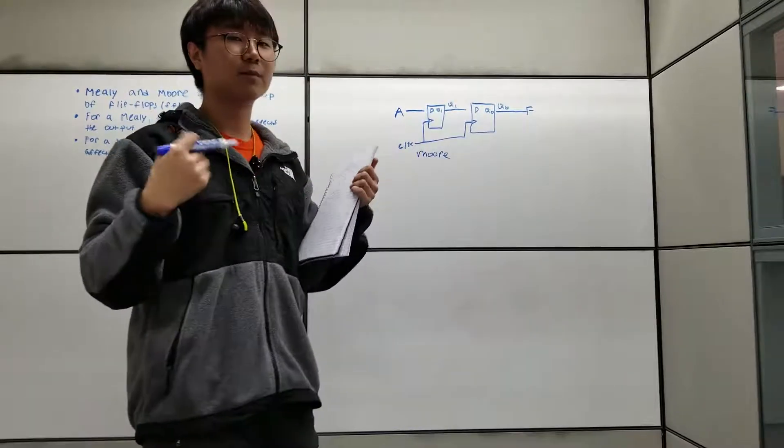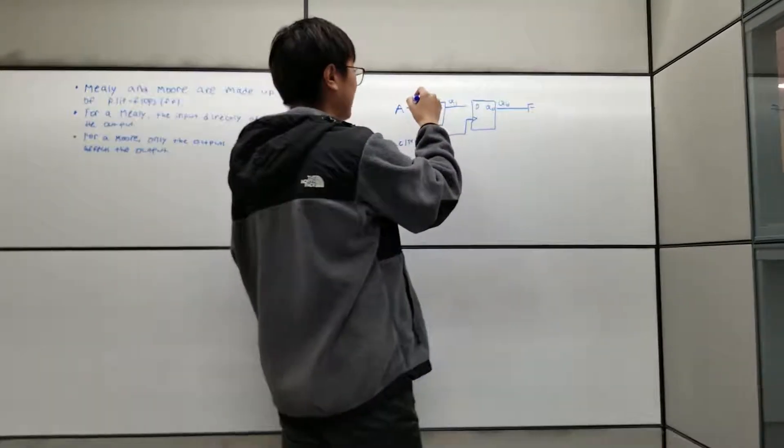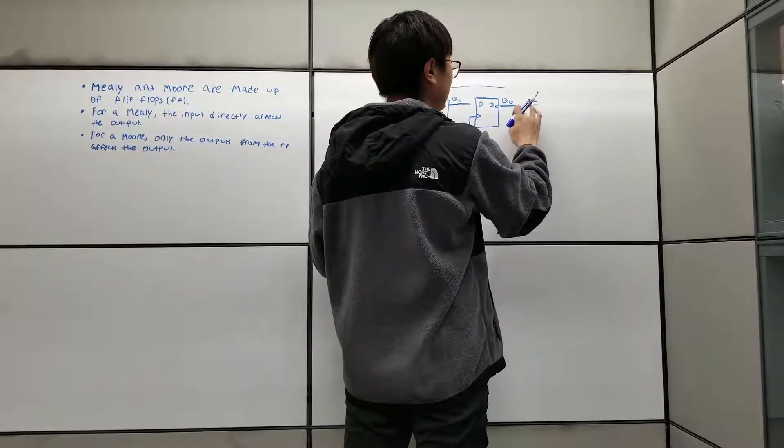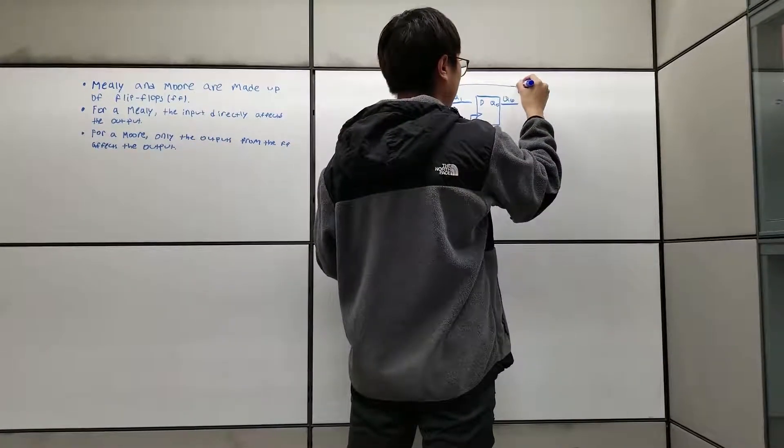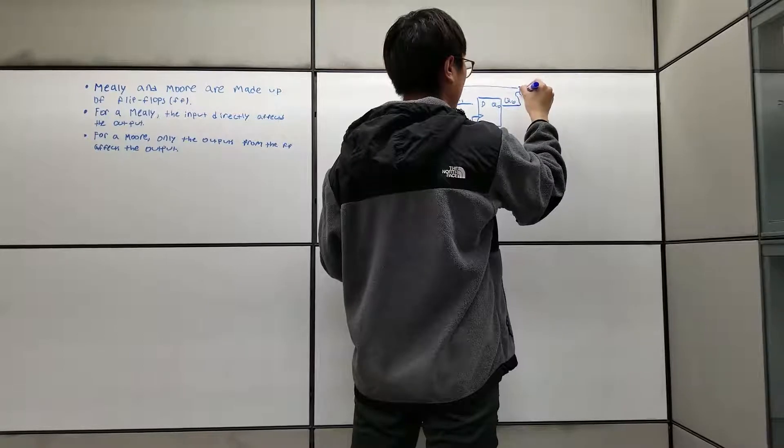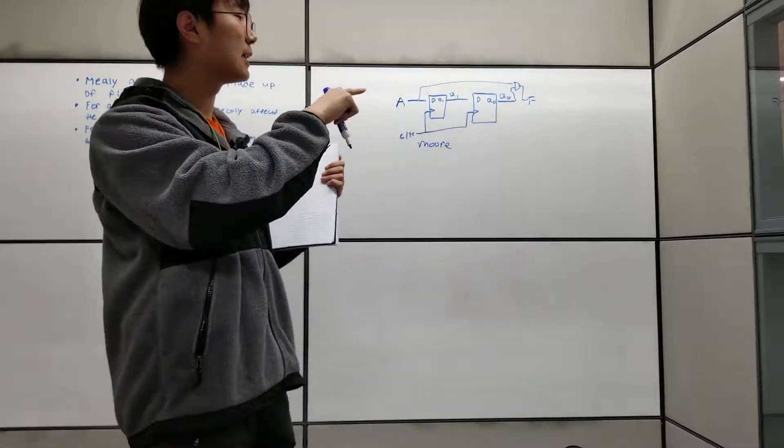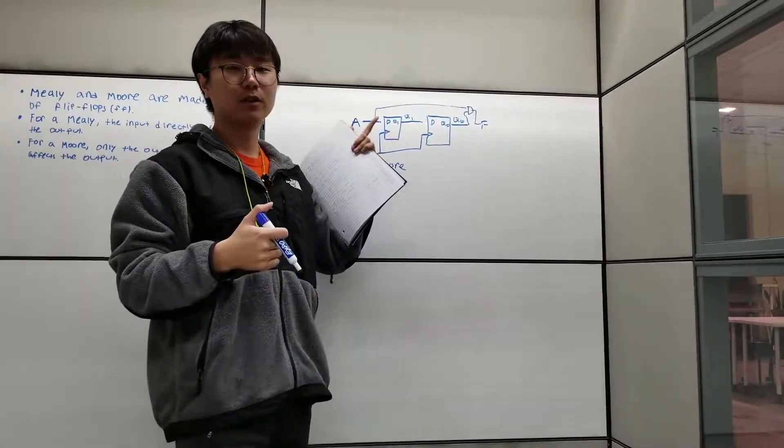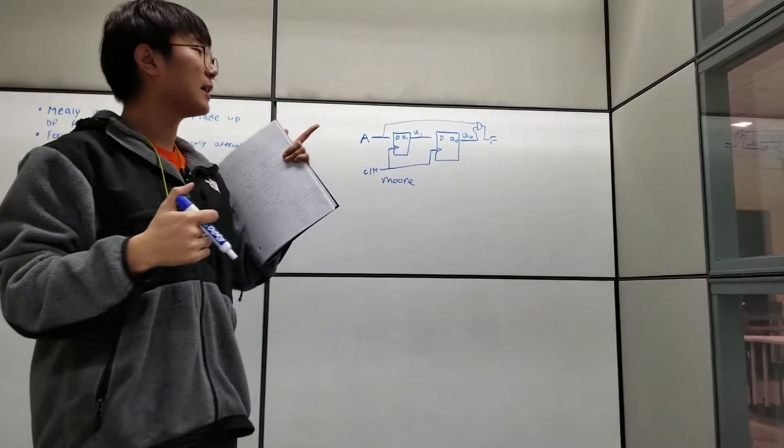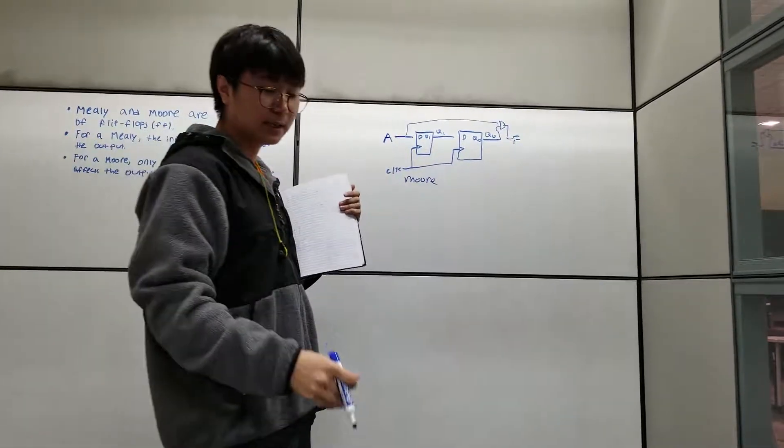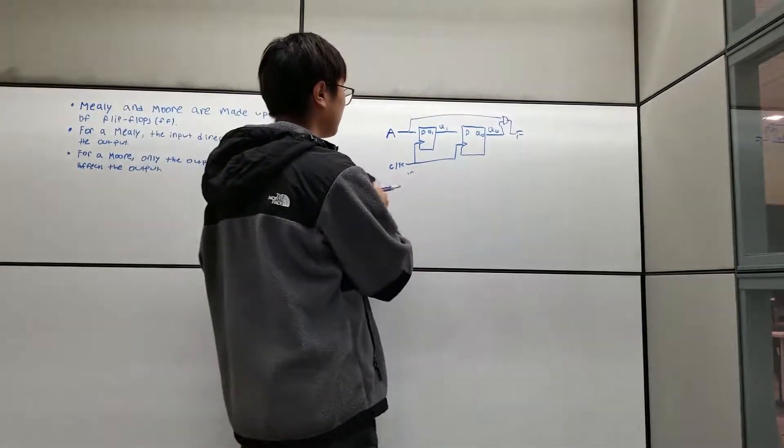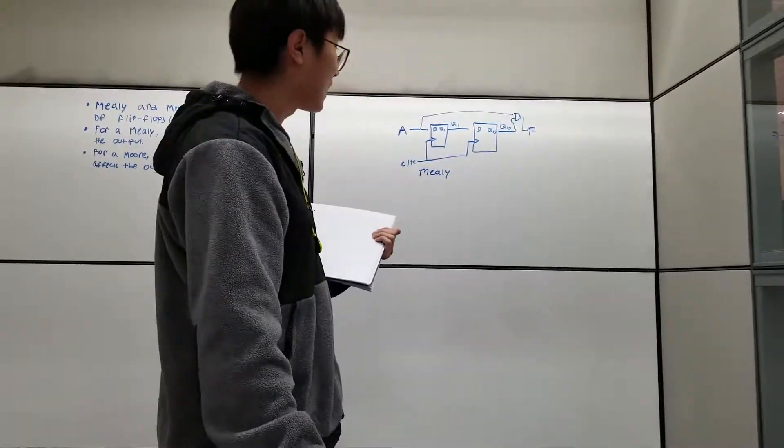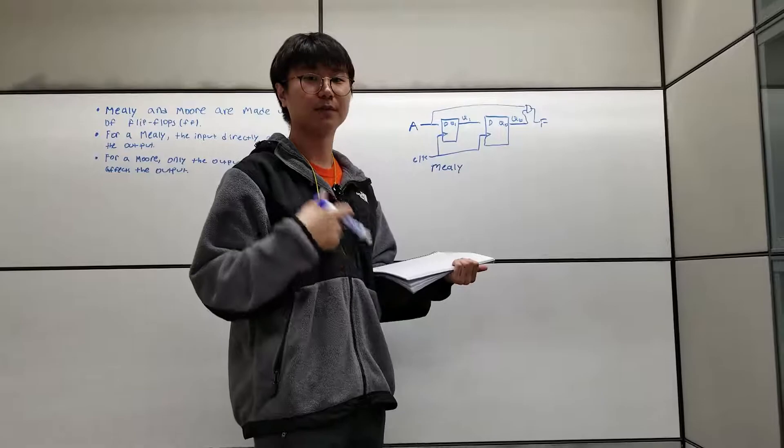But to make this into a Mealy, you would have the input directly influencing the final output. Since A is ANDed with Q0, that will make it into a Mealy. And that's the biggest difference in terms of circuit diagram.